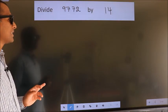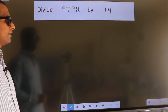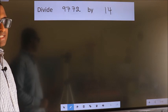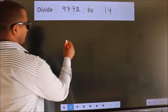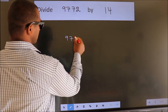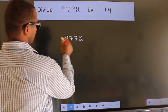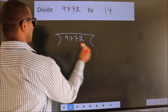Divide 9772 by 14. To do this division, we should frame it in this way. 9772 here, 14 here.